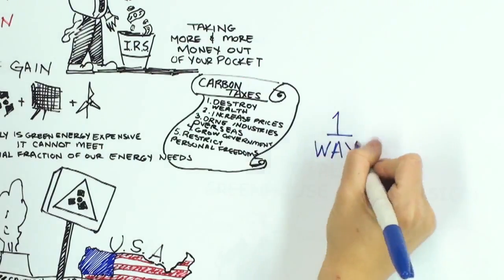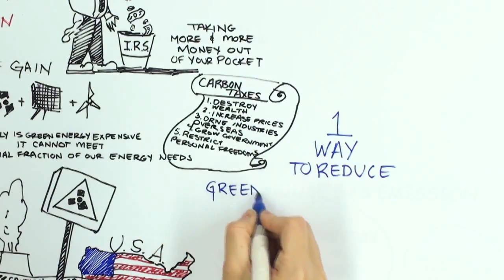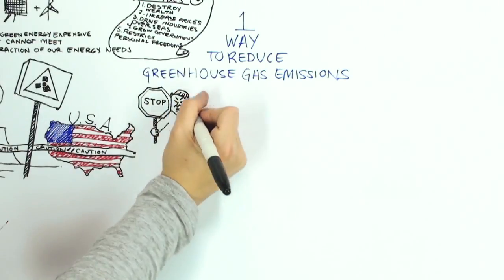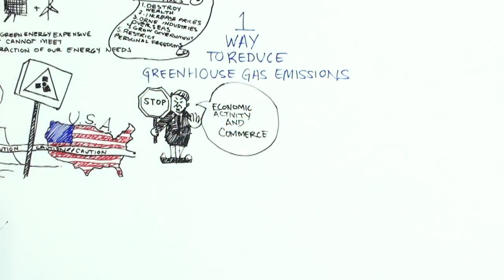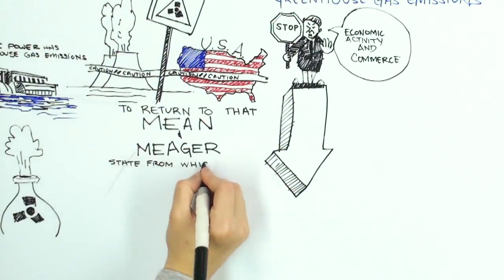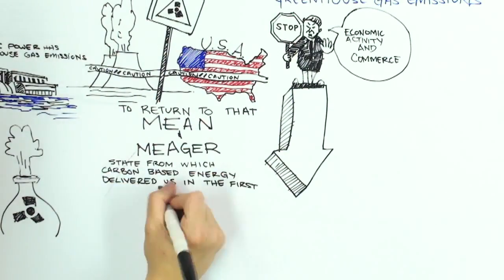Which leaves us with only one immediate and effective way to reduce greenhouse gas emissions: to simply cease all economic activity, all commerce in the world, to return to that mean and meager state from which carbon-based energy delivered us in the first place.